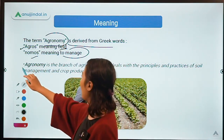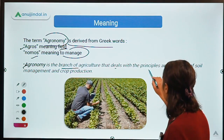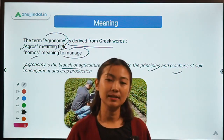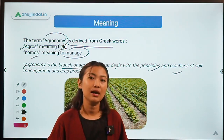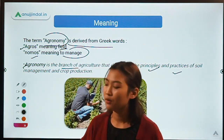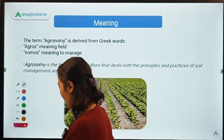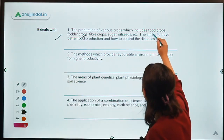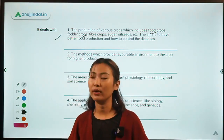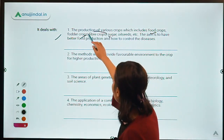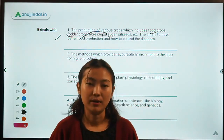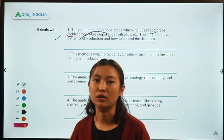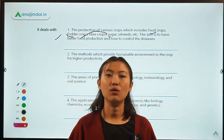Agronomy can be defined as the branch of agriculture which basically deals with the principles and practices of soil management and crop production. Agronomy deals completely with soil management practices as well as cultivation of crops — including fodder crops, food crops, fiber crops, sugar crops, and oil seed crops. Vegetables and plantation crops won't be coming under agronomy; those will be coming under horticulture.